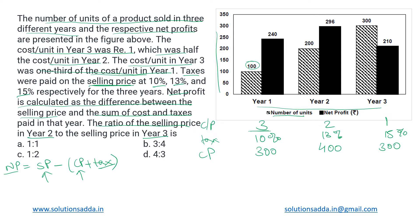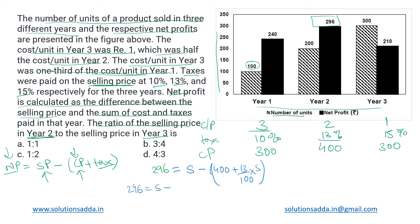To calculate the selling price, we put the cost price and net profit into the formula to get the selling price. For year two, the net profit given is 296. So we write: 296 = S − 400 − (13/100) × S, where S is the selling price and 13% is the tax rate for year two applied on the selling price.